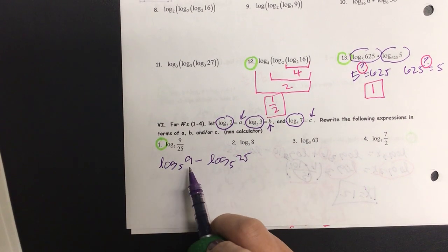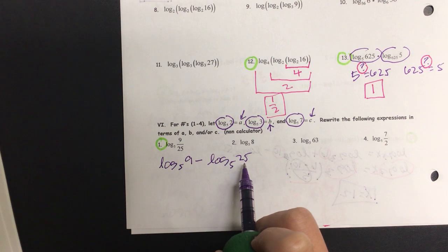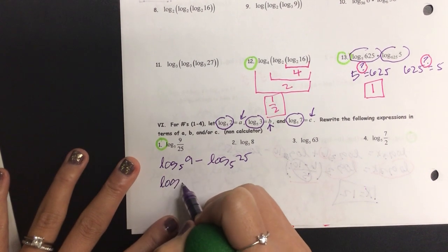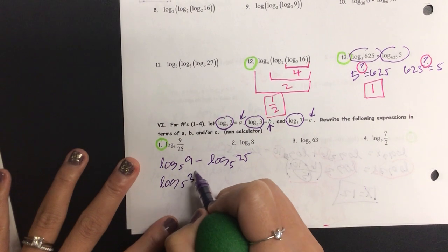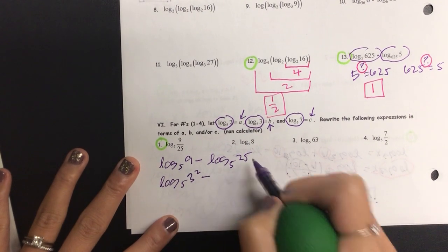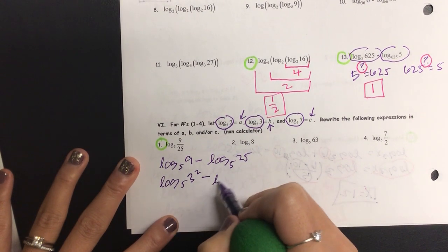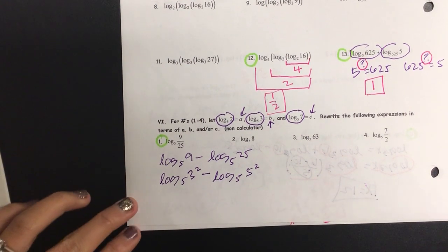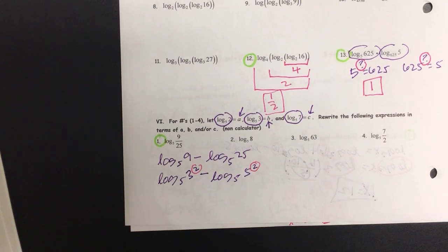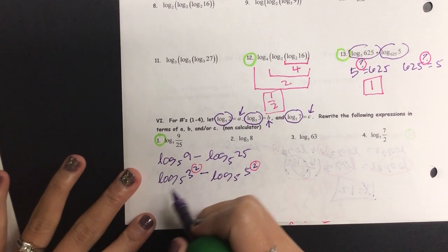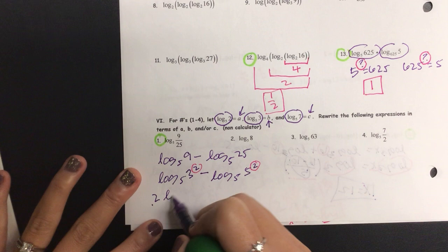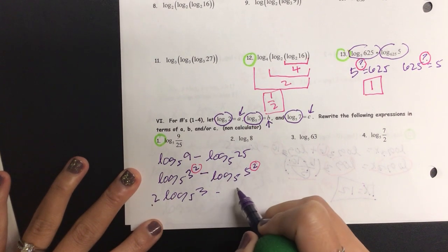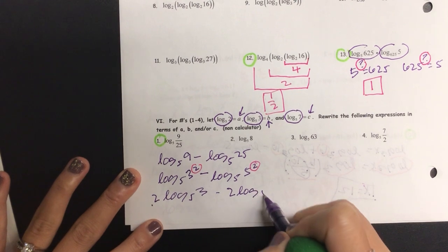So, log base 5 of 9 minus log base 5 of 25. But the problem is, I don't see a 9 anywhere. I don't see a 25 anywhere. So, what I can do is write out the 9 in a different form. Can I say 3 squared? Yeah. And then on the next one, how would I write the 25 instead? 5 squared. And then, can I bring the power to the front? Yeah. So, when I do, I get 2 log base 5 of 3 minus 2 log base 5 of 5.